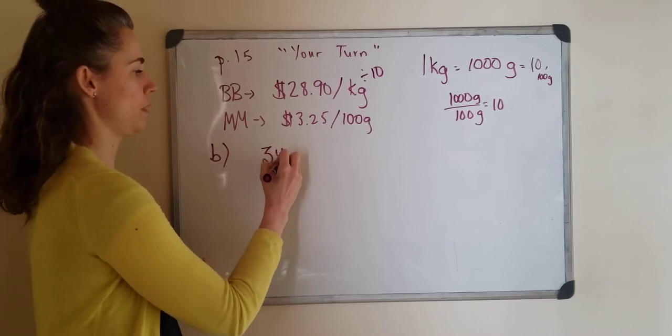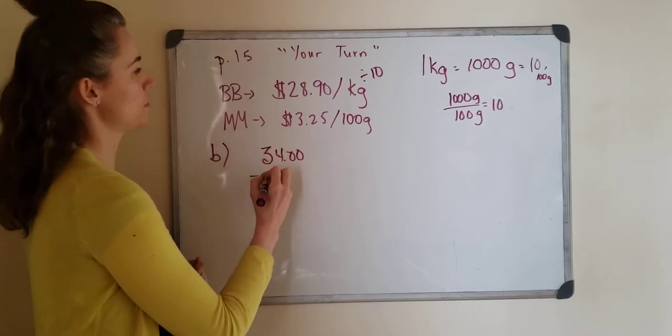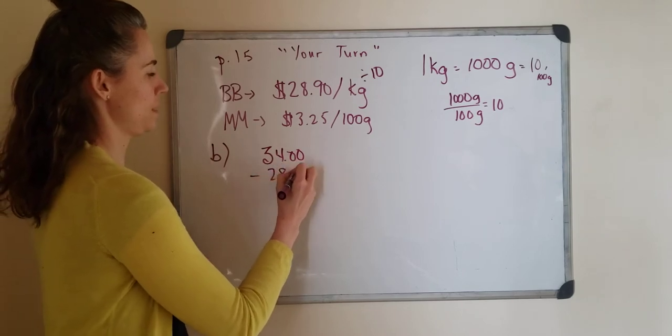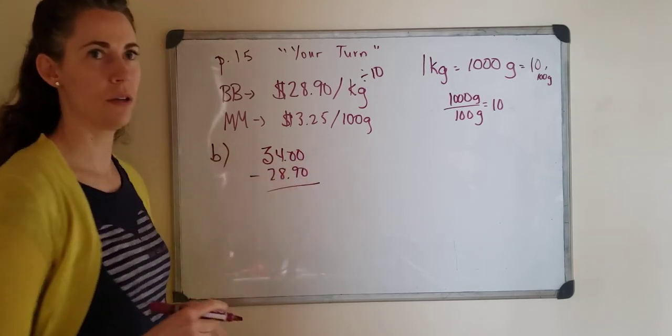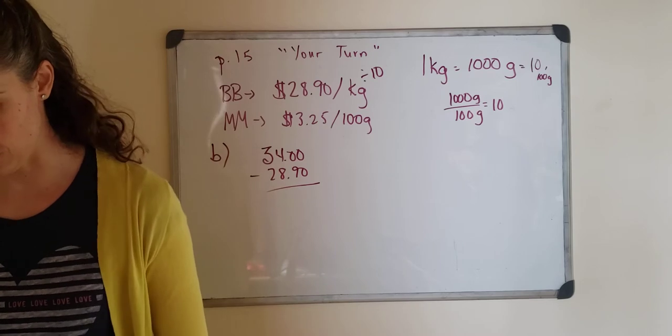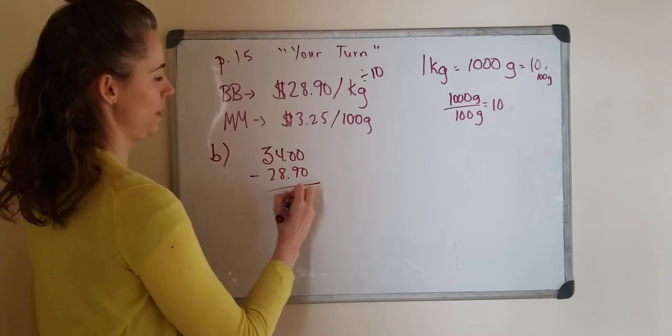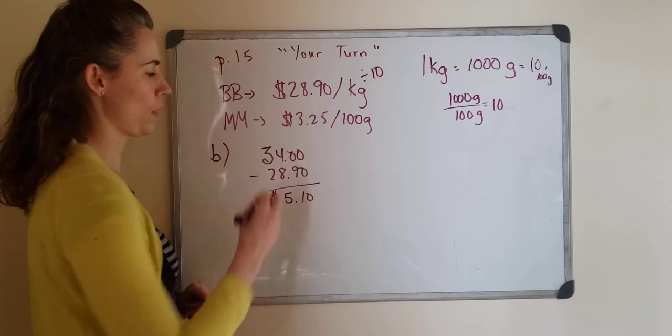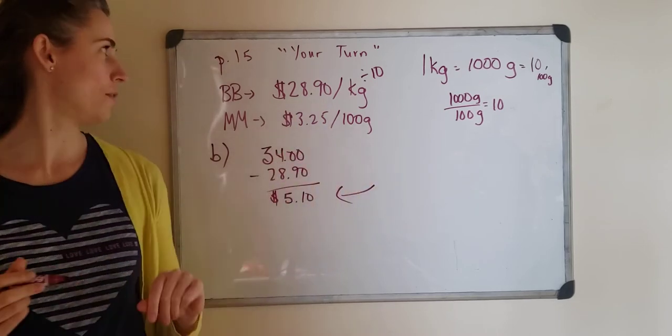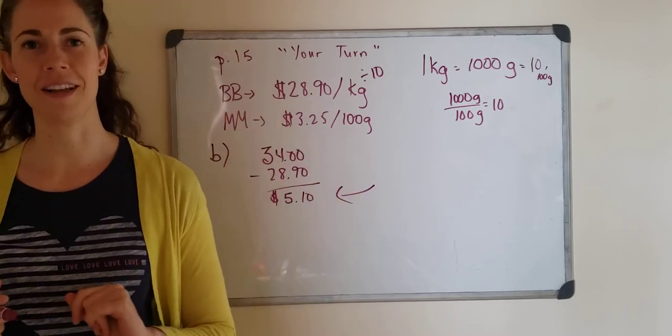So what is the increase in price? We're just going to subtract those. $34 subtract $28.90. You can use your calculator and get that answer or your mental math and you'll get $5.10. So the price increase for the Butcher Block is $5.10.